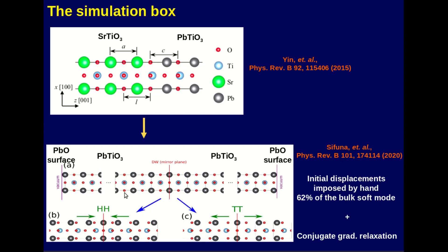We began from the paraelectric system, whereby the lead titanate atoms were displaced in opposite directions in the two halves of the slab geometry, following a displacement pattern of the bulk tetragonal soft mode scaled to 62%, as detailed in our paper.